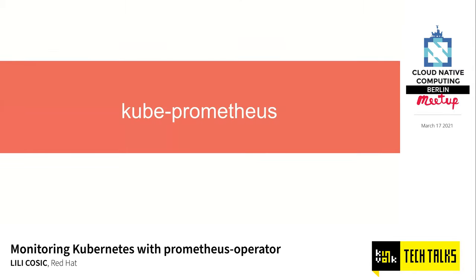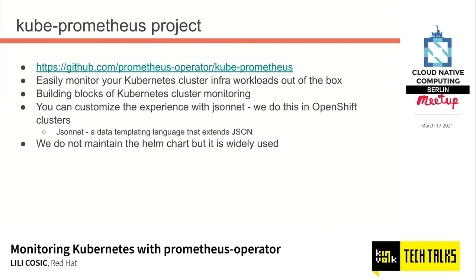Now let's look at the other project in the same organization: KubePrometheus. KubePrometheus is essentially a group of manifests that lets you easily monitor your Kubernetes workloads out of the box — things like etcd, API server, kubelet, the monitoring components themselves, and more. It provides all these manifests in the form of Jsonnet, a data templating language that extends JSON, which allows you to fully customize your experience. For example, in OpenShift we bring in KubePrometheus but apply very specific OpenShift customizations.